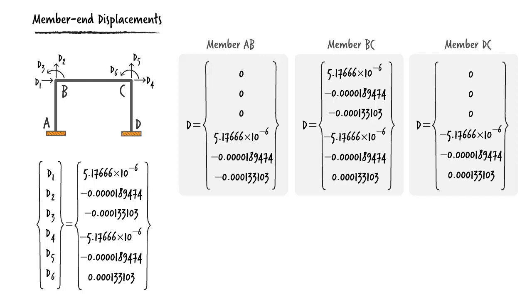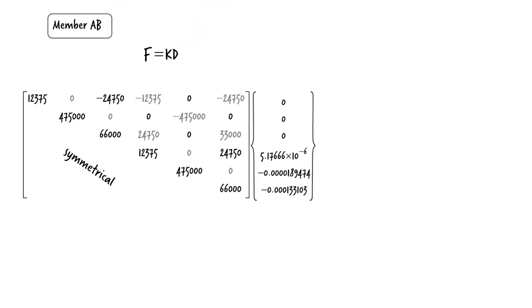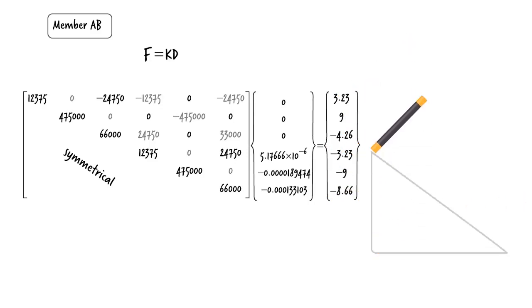Now we are ready to calculate member end forces. For AB, member end forces are obtained by finding the product of the member stiffness matrix and member end displacement vector. Here is the stiffness matrix and the displacement vector. For the member end force vector, we get the results. Let's show these forces diagrammatically.